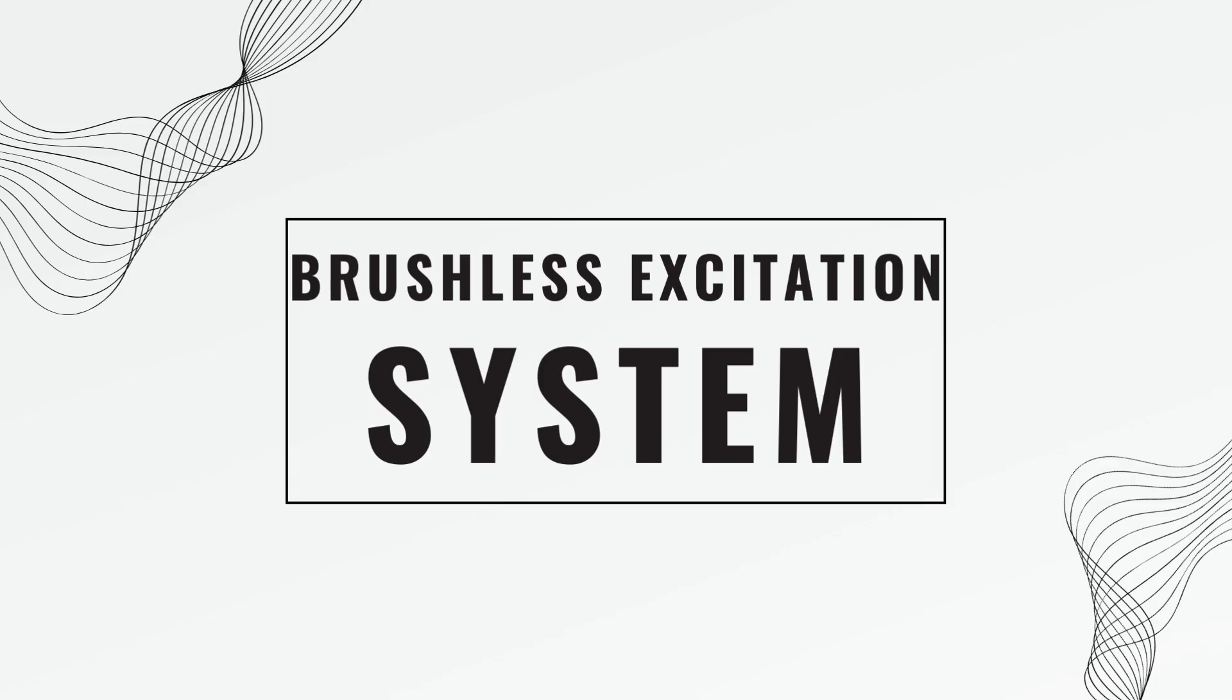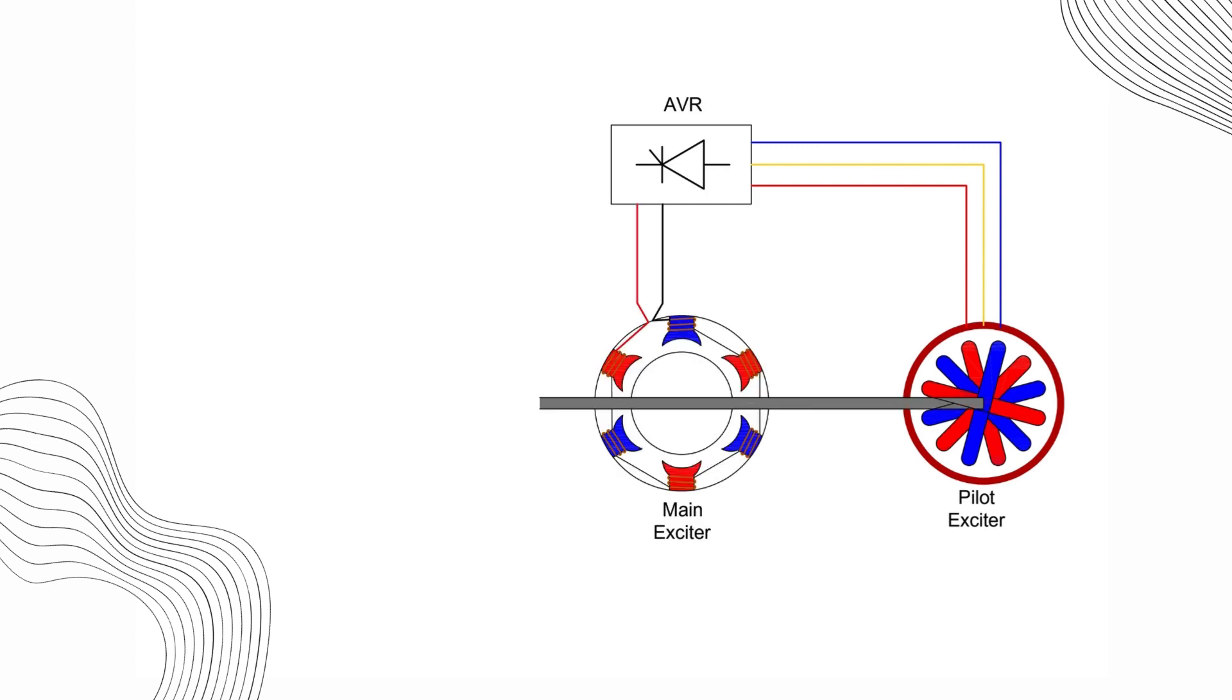In a brushless excitation system, there are 4 main components: the 16-pole permanent magnet generator, or pilot exciter, the automatic voltage regulator, or AVR, the 6-pole main exciter, and the diode rectifier wheel.